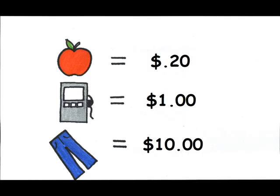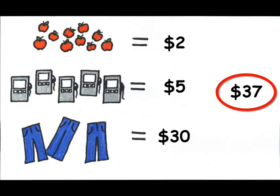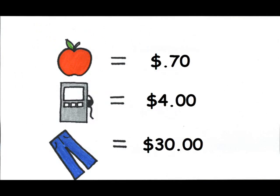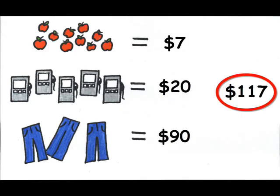This means that in the base year, the market basket would have cost $37: $2 to purchase 10 apples at 20 cents each, $5 to purchase 5 gallons of gas at a dollar each, and $30 to buy 3 pairs of jeans at $10 each. And in the current year, let's say an apple costs 70 cents, a gallon of gas costs $4, and a pair of jeans costs $30. This means that in the current year, the same market basket would cost $117: $7 for the apples, $20 for the gas, and $90 for the 3 pairs of jeans.